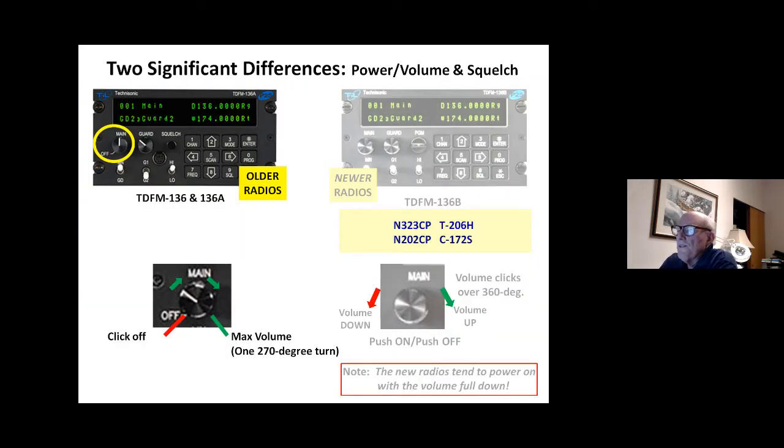Here are the two significant differences between the 136, 136A and the B models. The older radios have just the kind of thing you used to have on the old time radios, on-off switch in the volume control. Just very simple, click off, click on and then one 270 degree turn to adjust the volume.